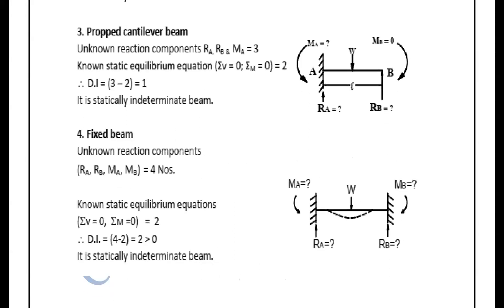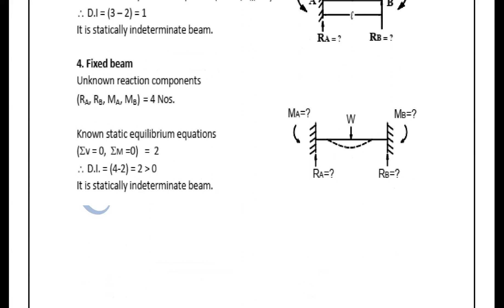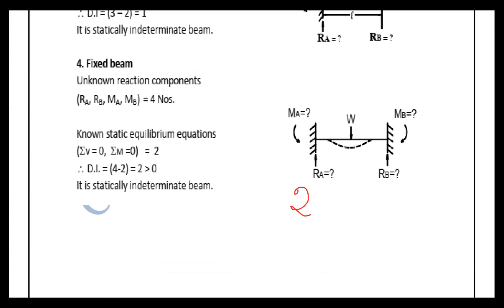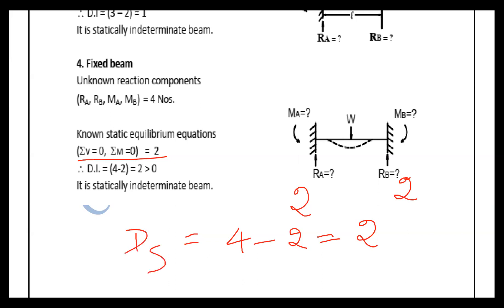Let's look at the fixed beam. The number of reactions is 4. The equilibrium equations for a beam are 2: sum of vertical force equal to zero, and sum of moment equal to zero. So 4 minus 2 equals 2. The Ds equals 2, which is greater than zero, so the fixed beam is statically indeterminate. For a framed structure with two fixed supports, the number of reactions is 6 and equilibrium equations is 3, so 6 minus 3 equals 3 — it is statically indeterminate with degree 3.